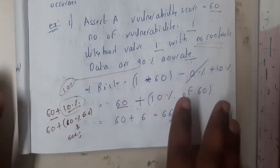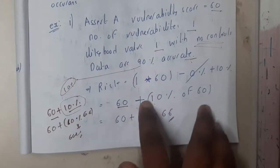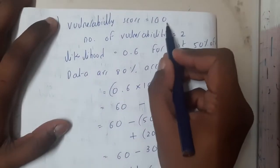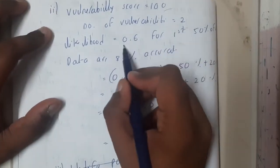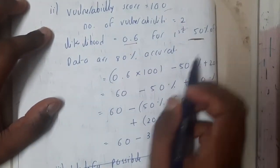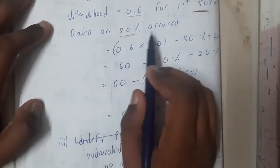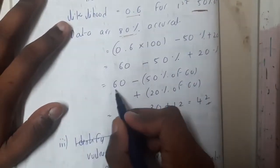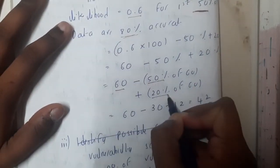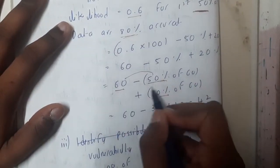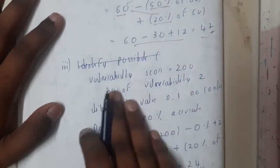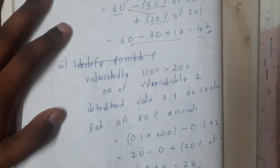If you are confused about adding a percentage to a number, just take 10% of 60 and add it — that's it. Similarly, the second problem uses the same approach: score is given, likelihood is 50% chance of occurrence, control is given, and accuracy is 80% so uncertainty is 20%. You calculate 50% of 60 and 20% of 60 and combine them to get the result.